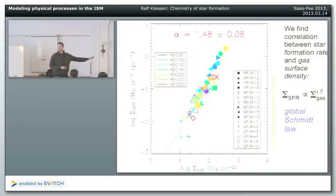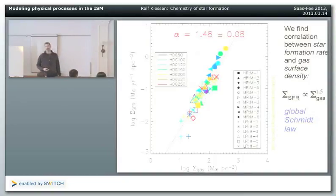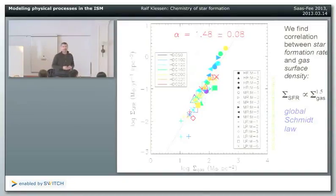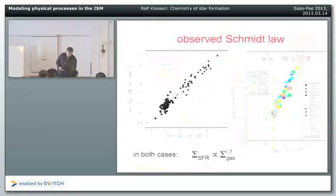There is a debate about whether this is the right index, at what scales the Kennicutt-Schmidt relation actually holds, and how to convert CO observations to gas surface density or to star formation rates. Nick will discuss this further, and I refer also to Rahul Shetty who is here and has worked on this problem.